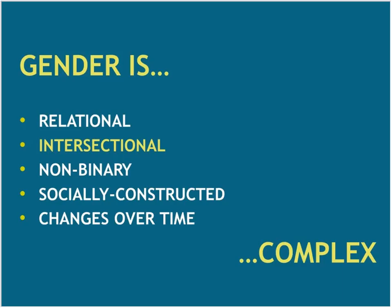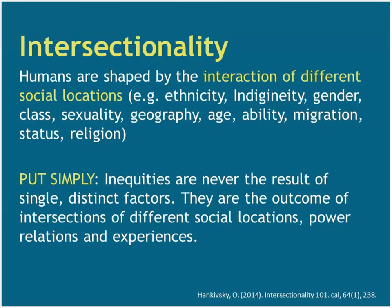When we talk about intersectionality, this is really important: humans are shaped by the interaction of different social locations — ethnicity, indigeneity, gender, class, sexuality, geography, age, ability, migration status, religion, and so many other things — that interact with gender to create a different experience of the world. Inequities people experience are never the result of single distinct factors; they're the outcome of intersections of different social locations, power relations, and experiences.